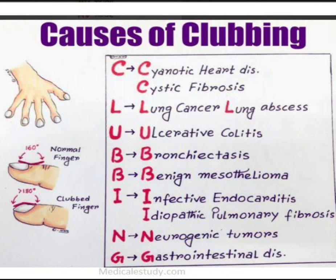Here is a mnemonic to remember the causes of finger clubbing — the mnemonic is CLUBBING: C for cyanotic heart disease and cystic fibrosis, L for lung cancer and lung abscess, U for ulcerative colitis, B for bronchiectasis, another B for benign mesothelioma, I for infective endocarditis and idiopathic pulmonary fibrosis, N for neurogenic tumors, and G for gastrointestinal disease.